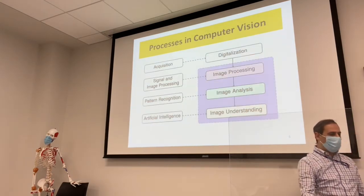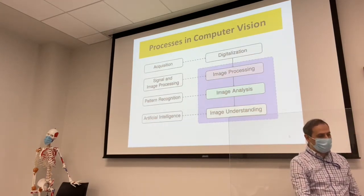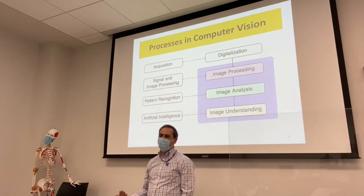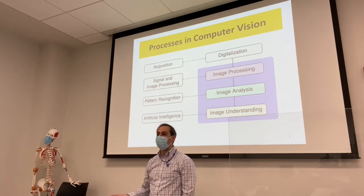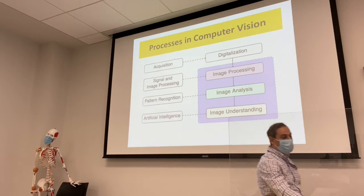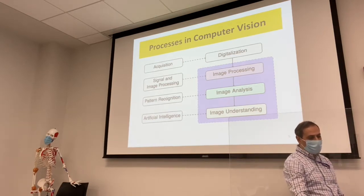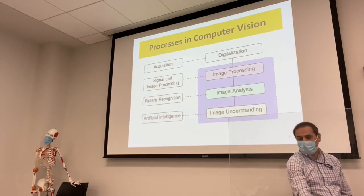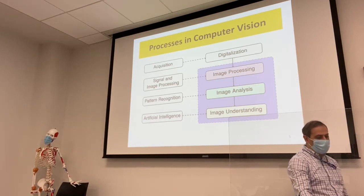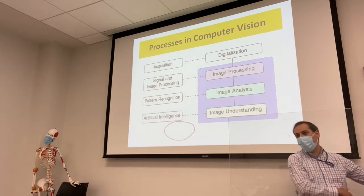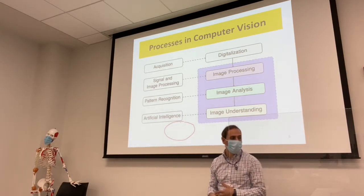What we would like to do is acquire data. As we learn from the class, our analog data needs to be digitized, so you need to do sampling and quantization — that's digitization. Then you do signal and image processing; after you digitize, you do image processing, then something called pattern recognition, which is analysis. Then you do image understanding from a big data set that we can compare, and that is what computerization means.